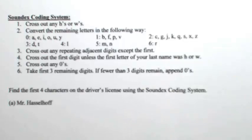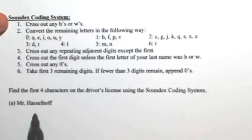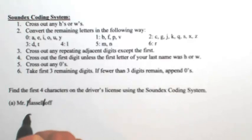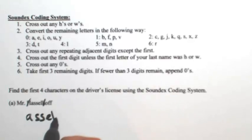So what we're going to do is go through three examples of how to encode just the last name using the Soundex coding system. In this first example, let's do the last name of Hasselhoff. So the first thing we're going to do, according to step one, is cross out any H's or W's. So the two H's in Hasselhoff are going to get crossed out, leaving us with Hasselhoff.